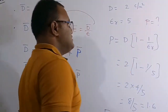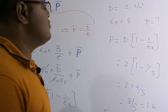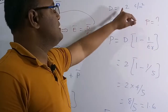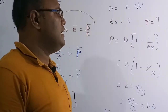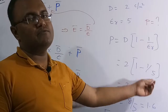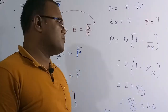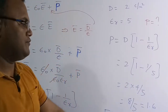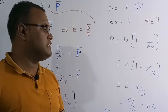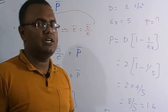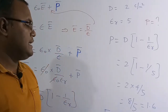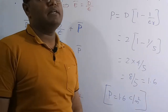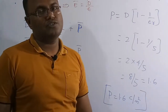Using P equals D times (1 minus 1/epsilon_r), with D equals 2 and epsilon_r equals 5: P equals 2 times (1 minus 1/5) equals 2 times 4/5 equals 8/5 equals 1.6. So the net polarization of the slab is 1.6 coulombs per meter squared.